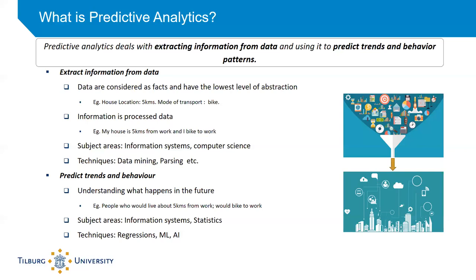Predicting trends and behavior involves understanding what is going to happen in the future by analyzing the information that you have. In the same example, a trend could be: people who live about five kilometers from work would bike to work. The subject areas involved in these predictions are information systems, statistics, and so on. The techniques that are used are regressions, machine learning, artificial intelligence, and so on.